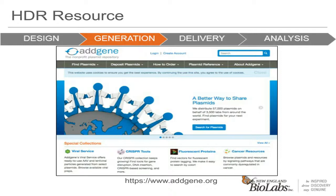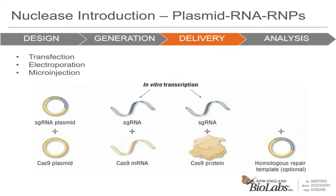Once all the pieces have been made, they need to be delivered to the cells. There are several ways to do this: microinjection, transfection by lipofection, or electroporation. Our preferred method is to use RNPs, as they will result in the highest doses and the shortest, most controlled duration. Plasmids can survive for longer, so the dose of Cas9 can be quite unpredictable. In short: high dose, short duration for best results.